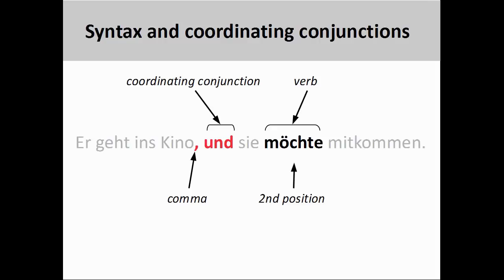It is also important to note that the syntax of the second independent clause is not altered in any way through the use of the coordinating conjunction. That is to say, the third-person singular present tense modal verb 'möchte,' meaning 'would like,' retains the second position in the sentence following the subject. This is the same syntax found in the original sentence. This is a characteristic of all coordinating conjunctions — they do not alter the syntax of the second independent clause.